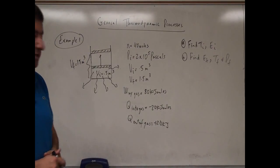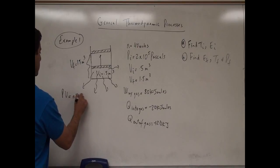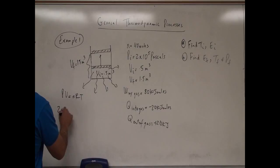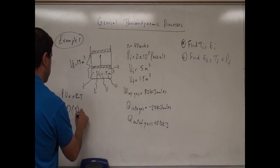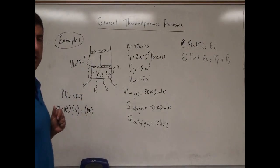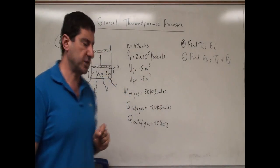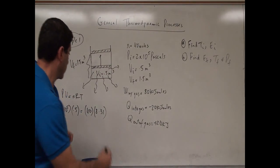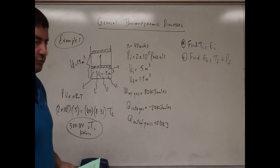Let's start with the ideal gas law: PV = nRT. The initial pressure is 2 times 10 to the fifth, the initial volume is 0.5 cubic meters, the number of moles is 40, and the gas constant is 8.31. Solving for the initial temperature gives us approximately 300.84 Kelvin — a comfortable room temperature.